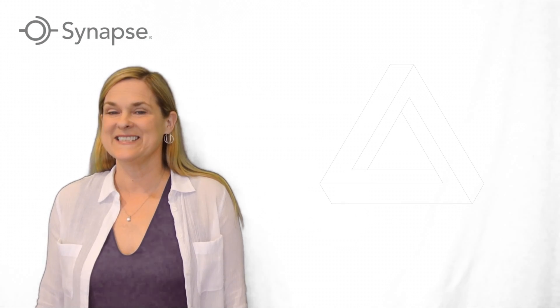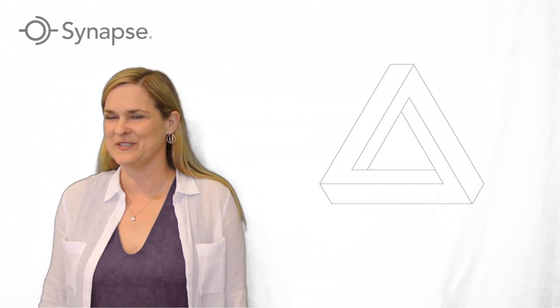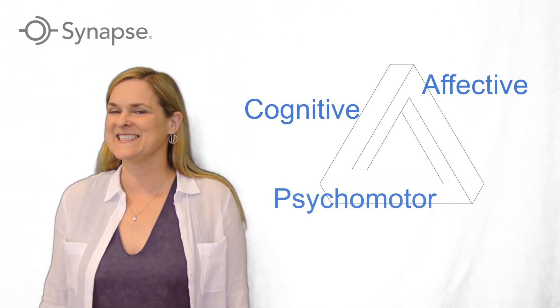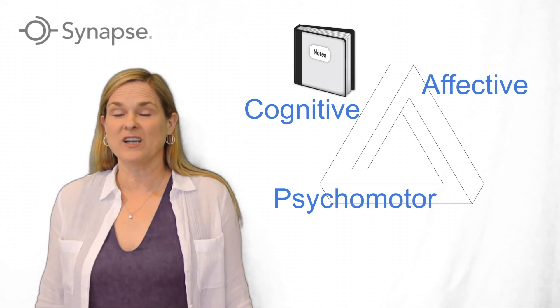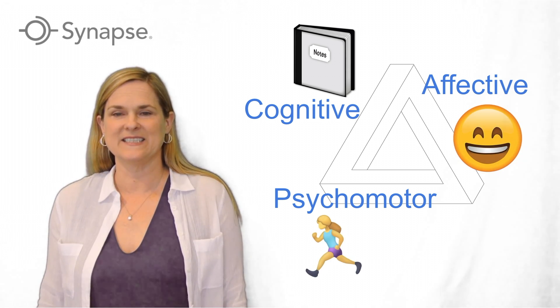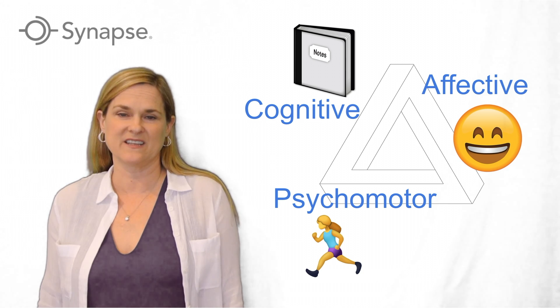Bloom's Taxonomy is a set of three hierarchical models used to classify learning objectives: cognitive, affective, and psychomotor. Cognitive is focused on knowledge, affective on emotion, and psychomotor deals more with the physical aspects.